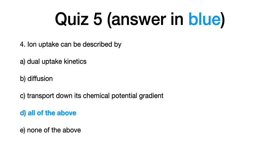Four, ion uptake can be described by all of the above: A, dual uptake kinetics, B, diffusion, and C, transport down its chemical potential gradient.